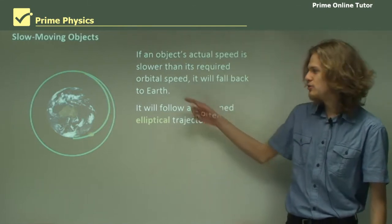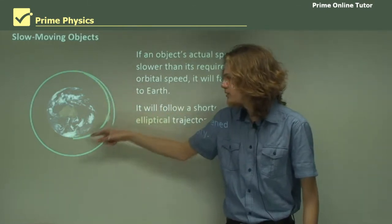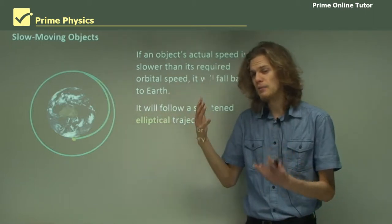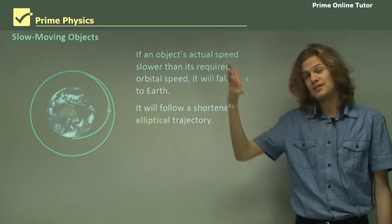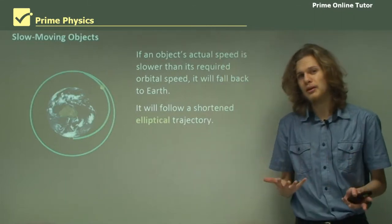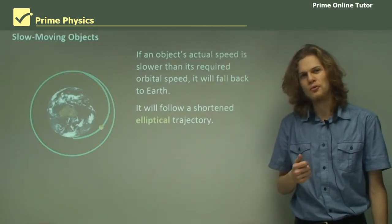So it will follow a shortened elliptical trajectory. If we were to continue drawing this line it would end up being an ellipse and end up right where it started. This is because as it gets closer to the Earth it speeds up a bit. That's one of Kepler's laws of course.